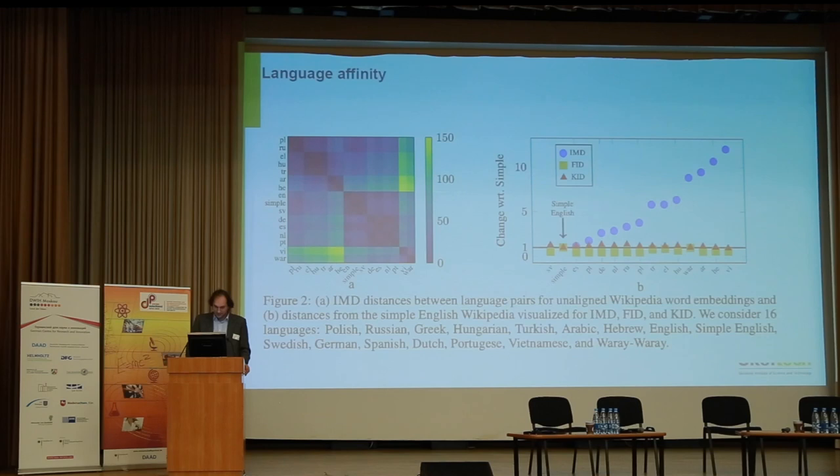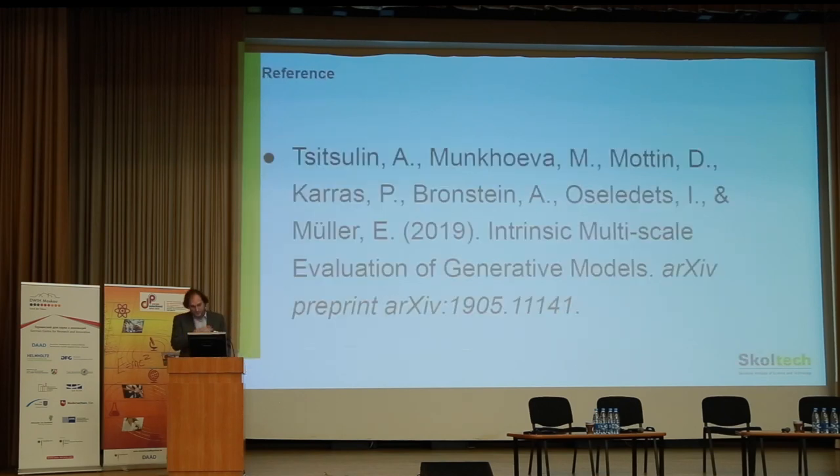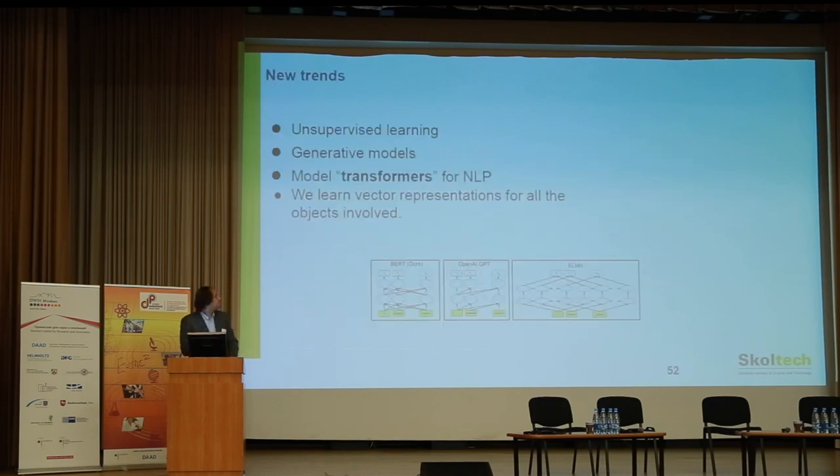A few words about trends: unsupervised learning is where people are investing a lot of time. We try to do learning not in supervised or reinforced ways. Of course we need supercomputers on one side, but we also need energy efficiency. Training a big AI model emits as much CO2 as five cars in their lifetime — so it's not very ecological. My answer is we need new algorithms.